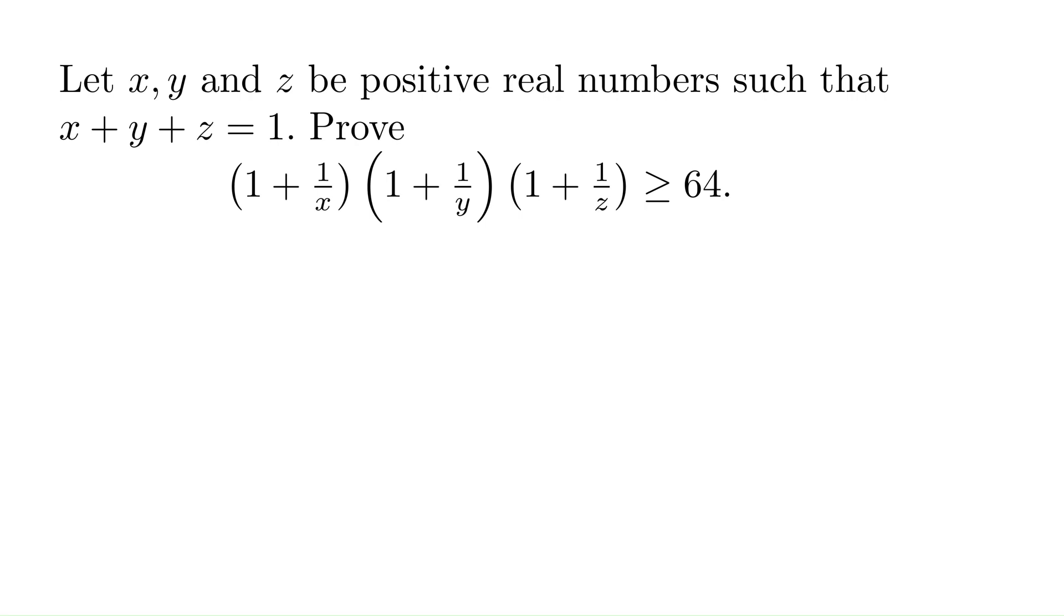Let's look at this simple inequality. x, y, z are positive real numbers. Their sum equals 1. Prove that 1 plus 1 over x times 1 plus 1 over y times 1 plus 1 over z is greater than or equal to 64.